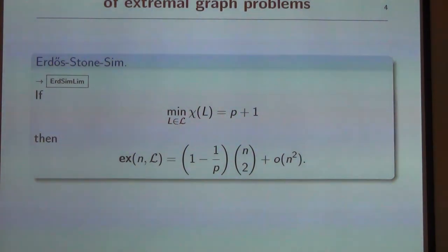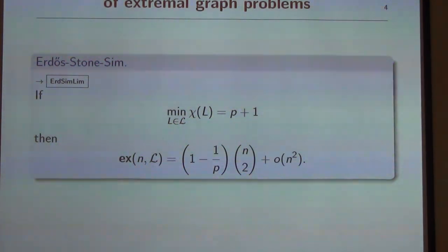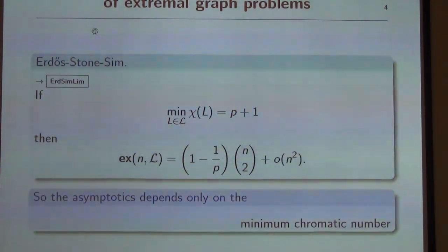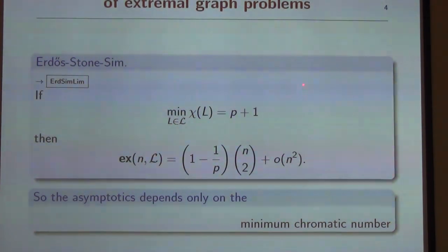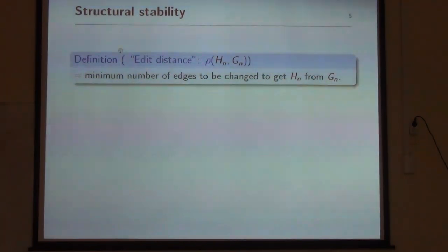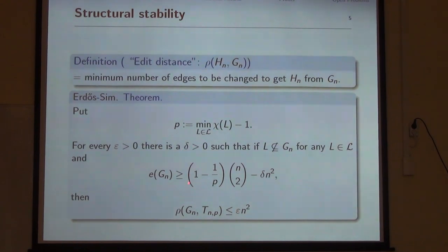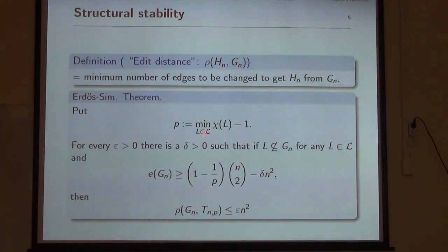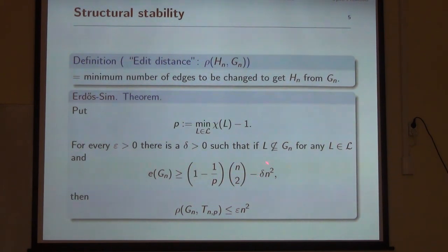The asymptotic solution of such an extremal problem can easily be obtained if you know the Erdős-Stone theorem. Erdős and I observed that the minimum chromatic number in the forbidden family determines the asymptotic extremal number, and the asymptotic structure is also quite well defined by this parameter. Structural stability means that if two families have the same minimum chromatic number, then their extremal graphs are essentially the same — almost a Turán graph.